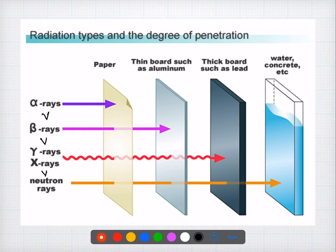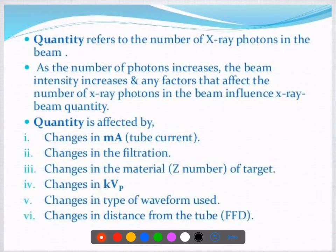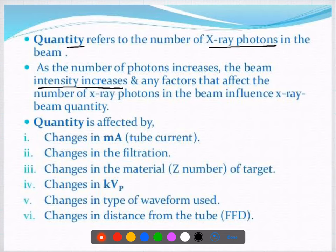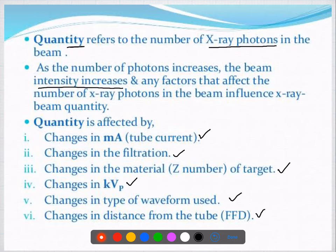Question number five asks how the quantity of x-rays can be increased. The quantity refers to the number of x-ray photons in the beam. As the number of photons increases, the intensity of the x-ray increases. Factors affecting quantity include the tube current, filters used, target material, change in KVP, change in waveform, and change in distance from the tube.